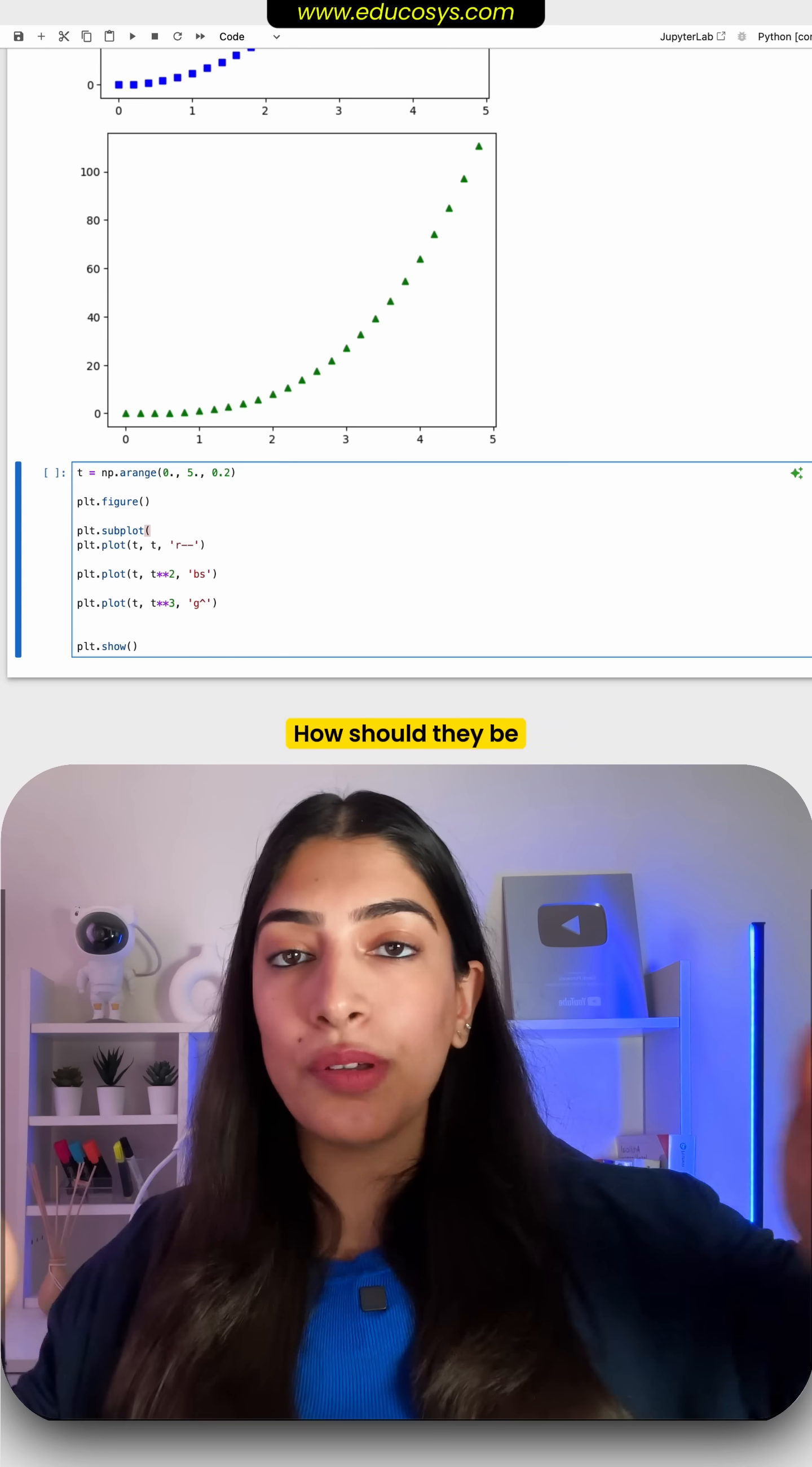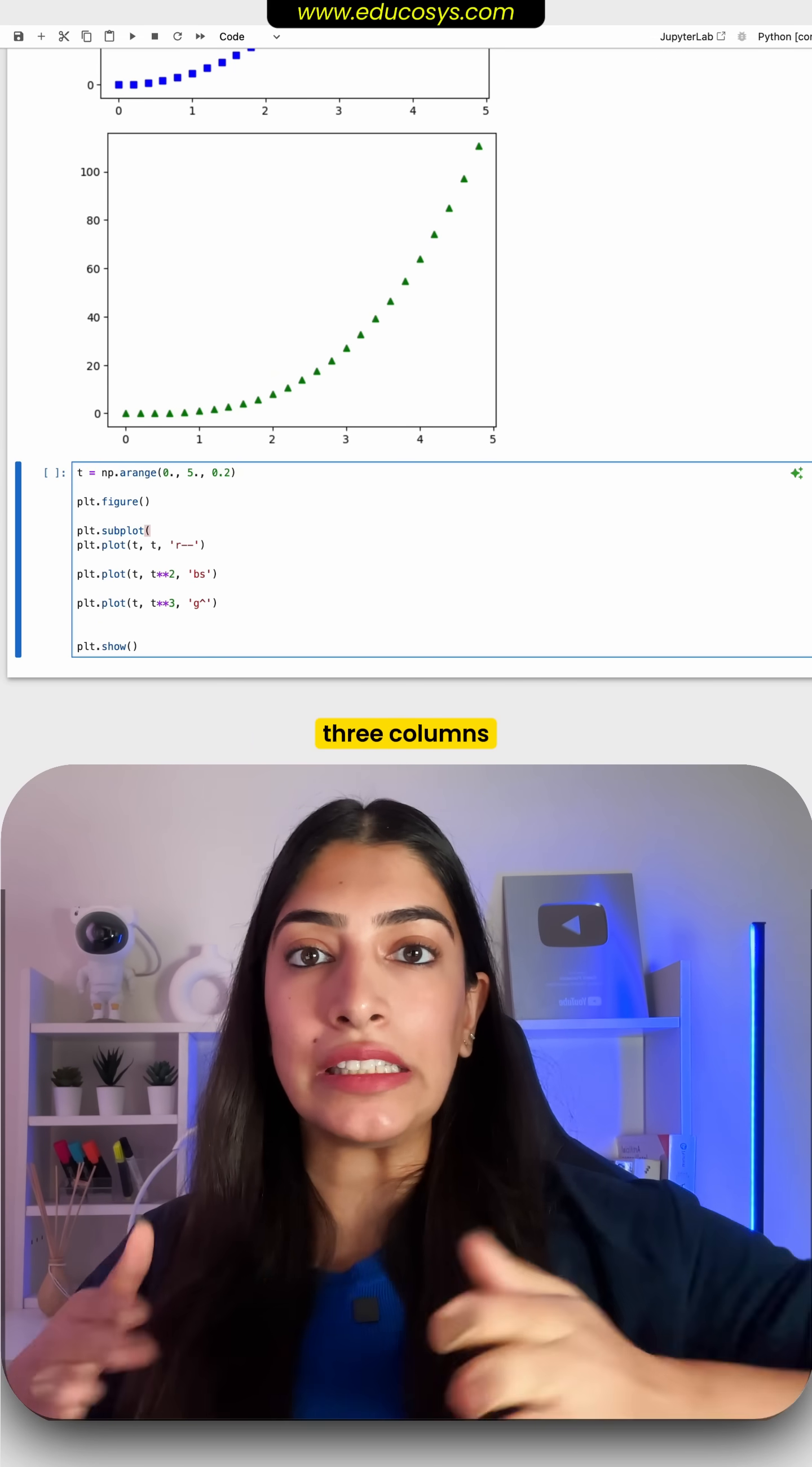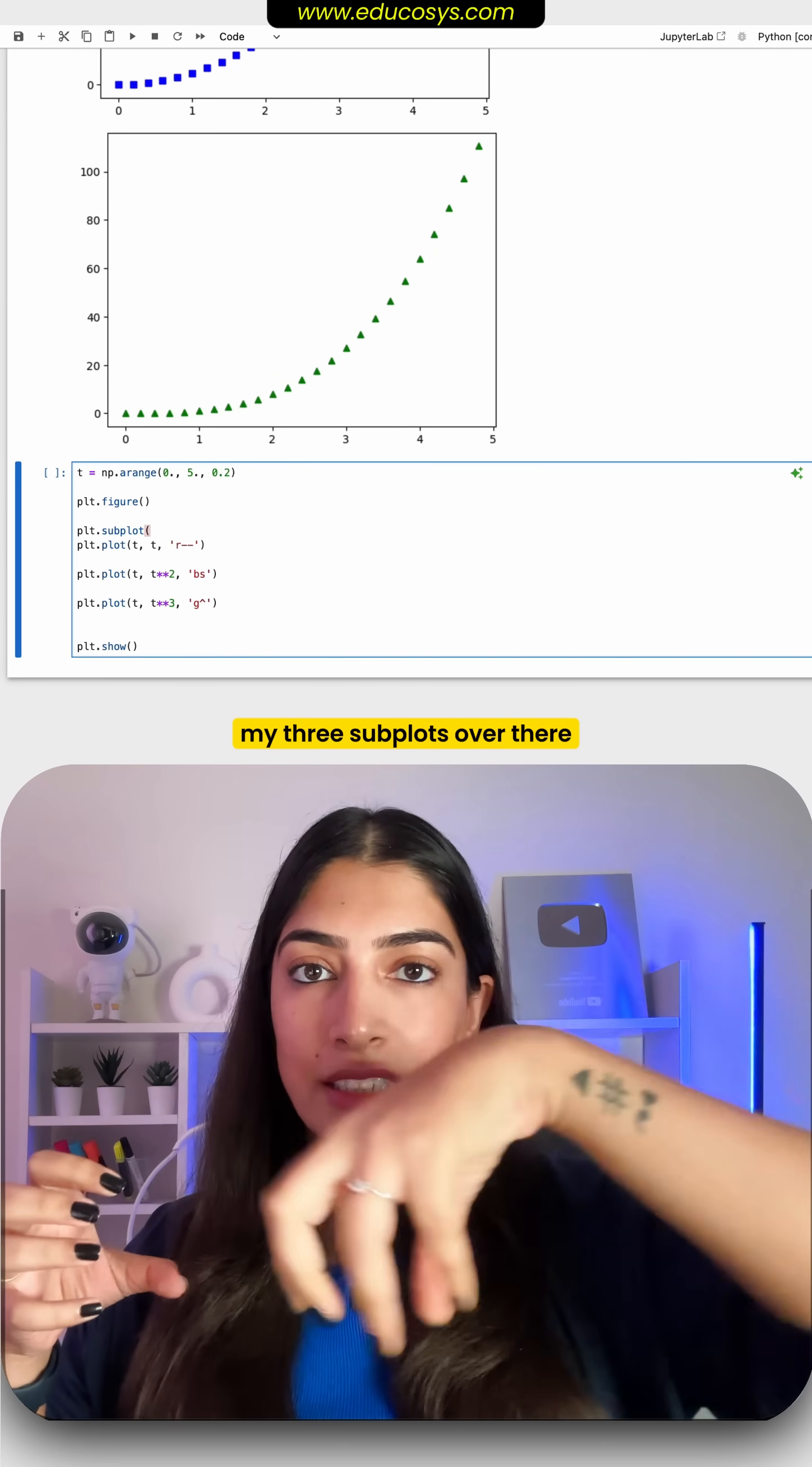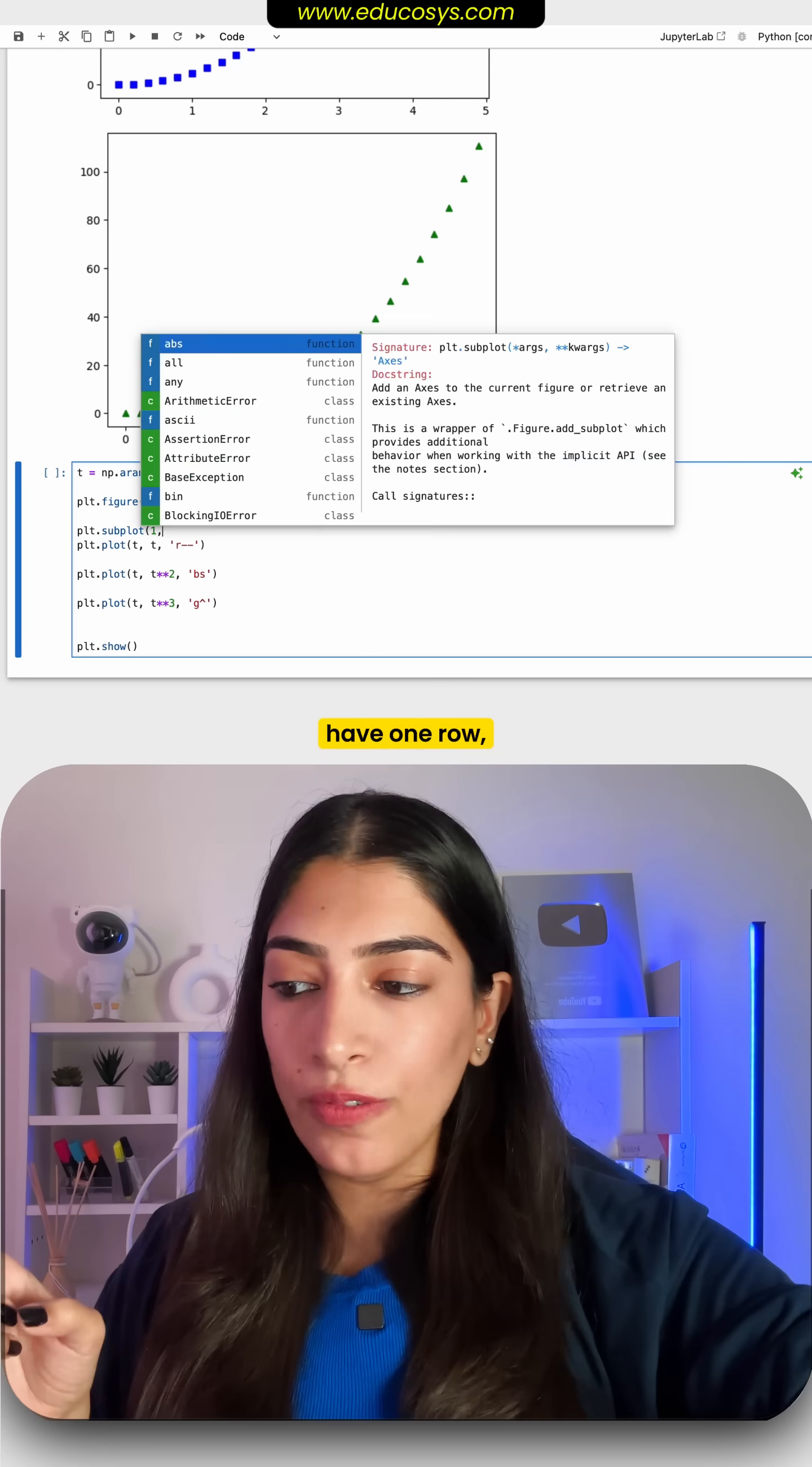Now how should they be plotted next to each other? I am going to divide it into three columns so that I can put my three subplots over there. Have one row, have three columns.